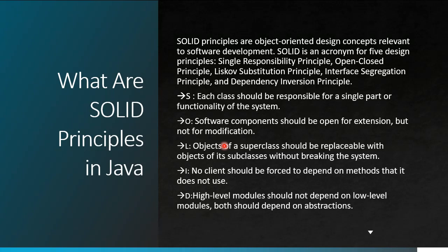There can also be a counter question: have you ever seen SOLID principles being broken in your application? Yes, in many classes we unnecessarily implement interfaces where we need only a few methods but the interface has 10–15 methods. In the implementation, those unused methods are left with just a logger or a comment saying 'this method will never be called.' That is where Interface Segregation gets broken.